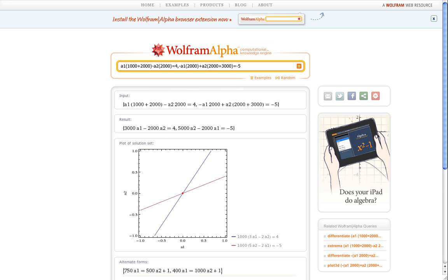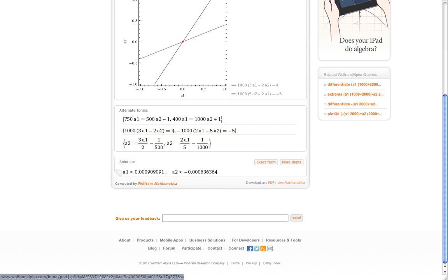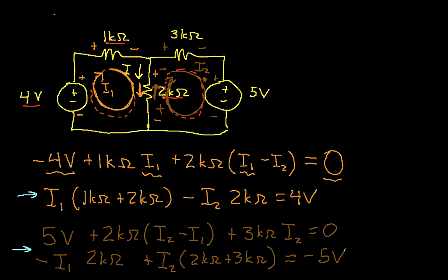Gives us a solution in approximate form. That gives us a numerical solution. And you can see from this that A1, which is what I called I1, is going to be 0.909 milliamps. And A2 is going to be minus 0.636 milliamps. So if we go back to our circuit diagram, we have now that I1 was 0.909 milliamps. I2 is minus 0.636 milliamps.